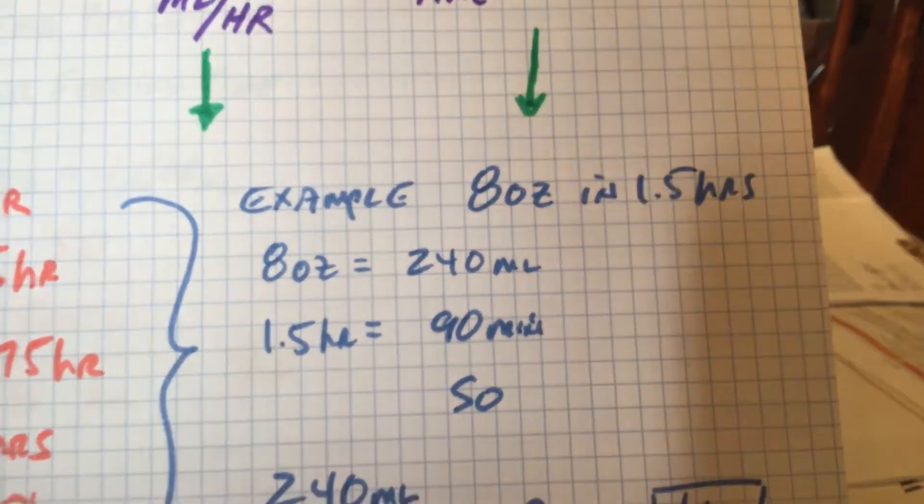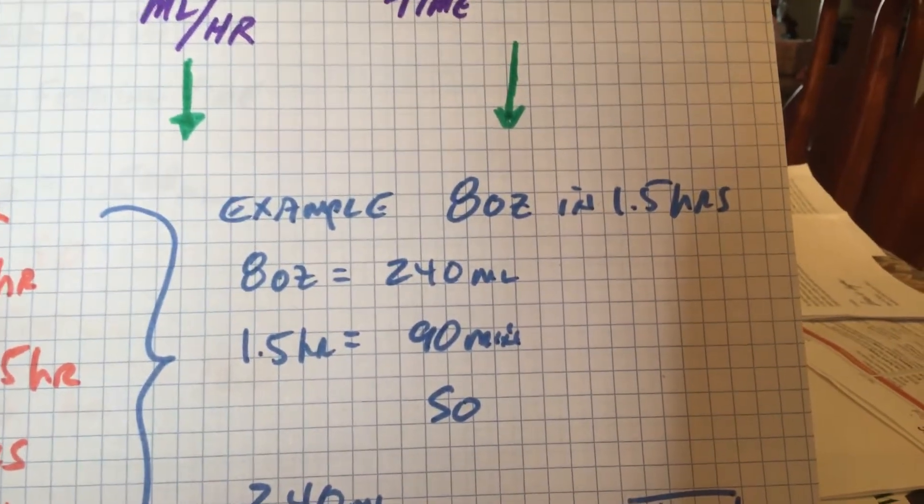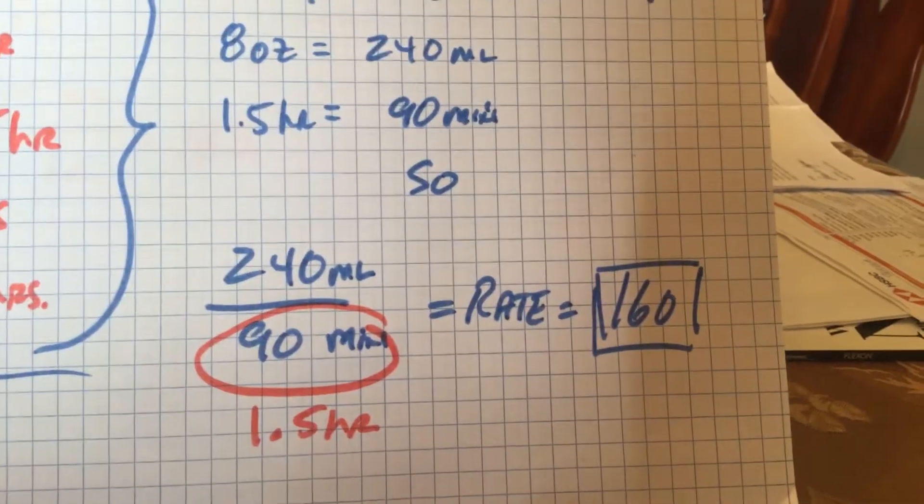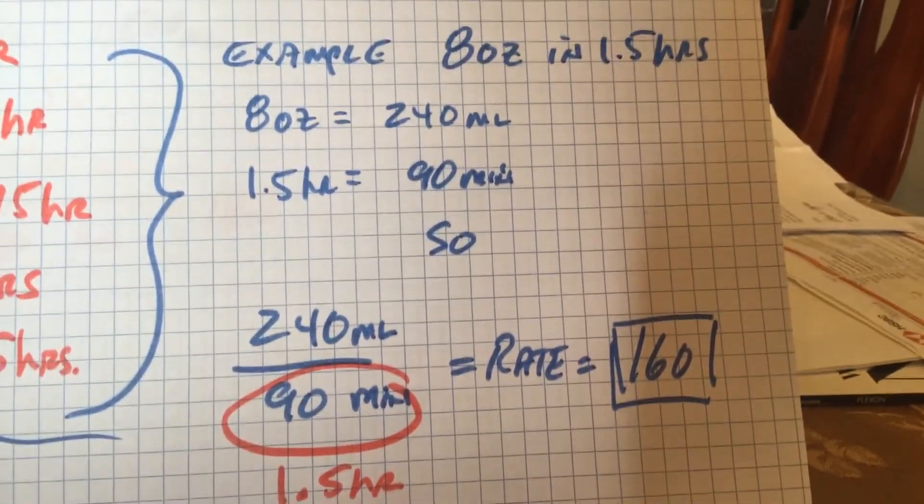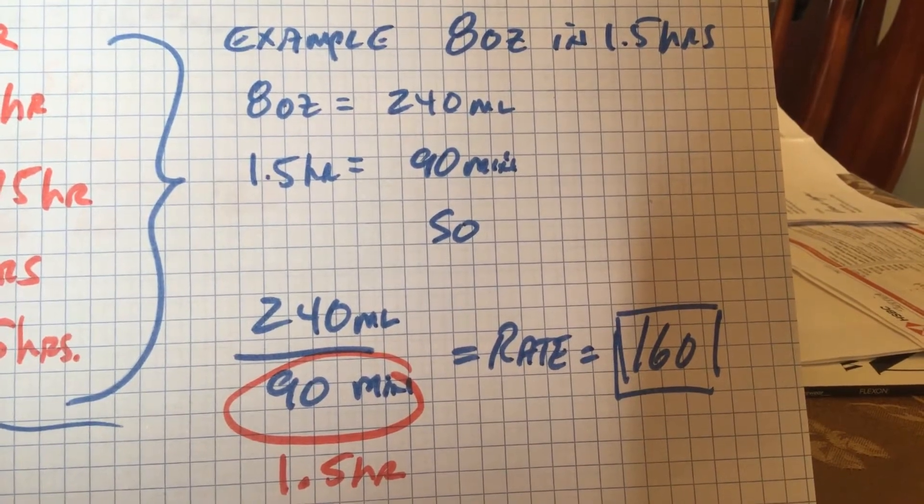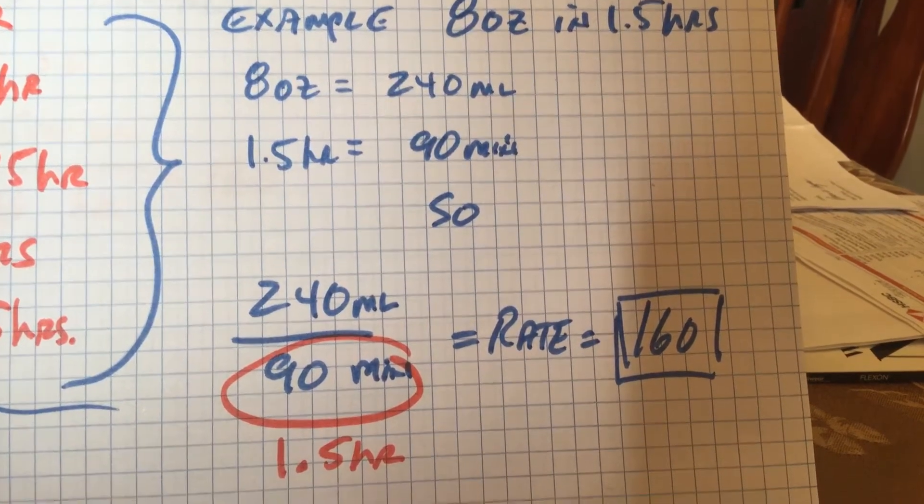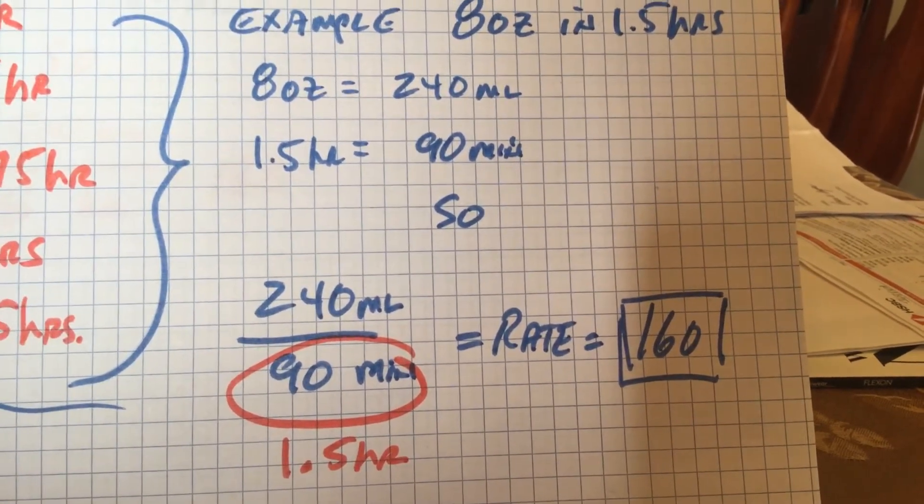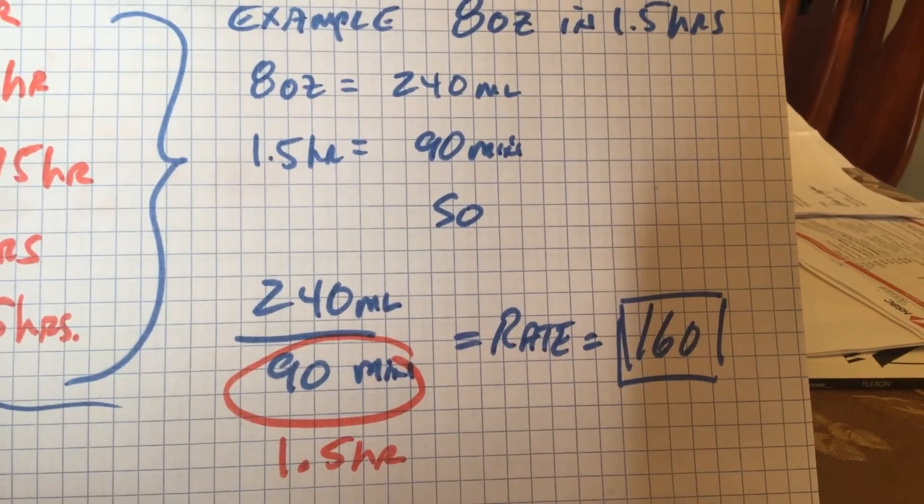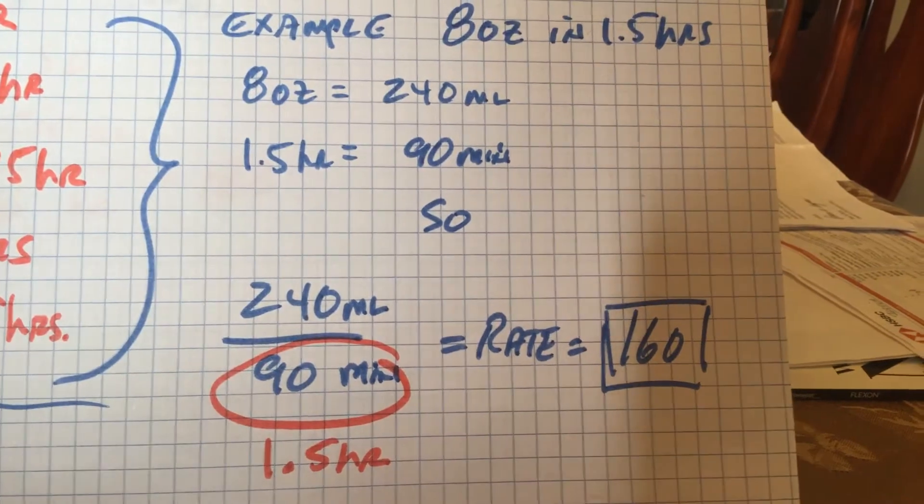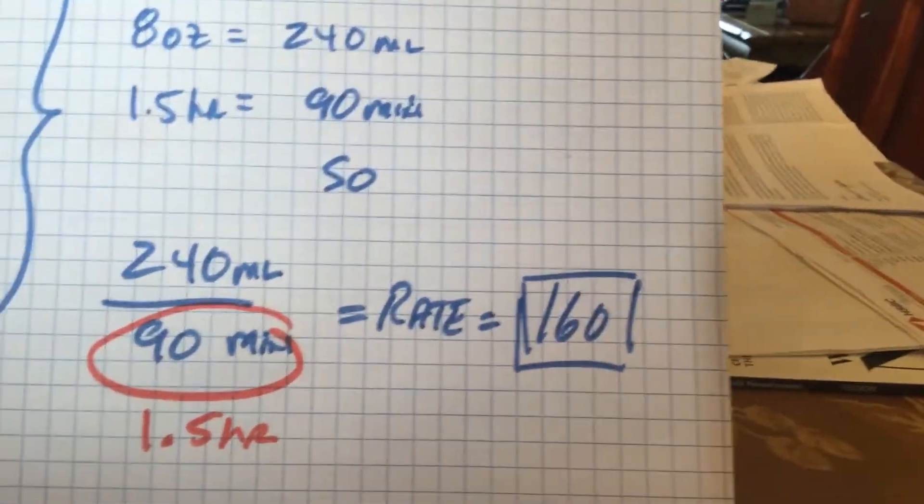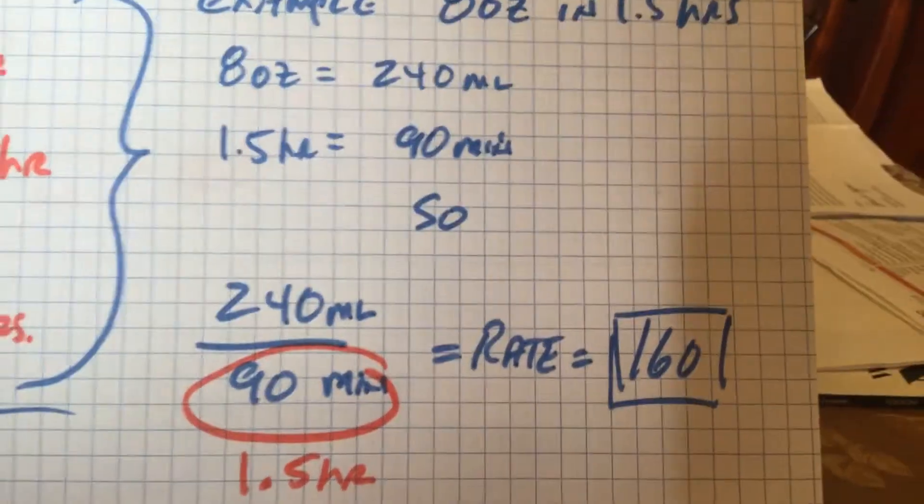Eight times 30 is 240. An hour and a half is 90 minutes. So we take 240 in our numerator over, not 90 minutes, but over one and a half hours. And that's where most people make their mistake. So here we have 240 divided by 1.5. That's our rate. And we set the feeding pump at 160. Let's turn the page and look at another example.